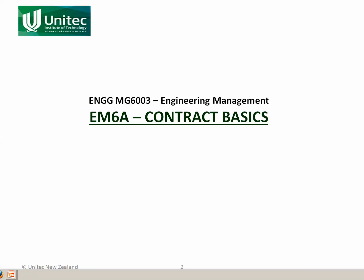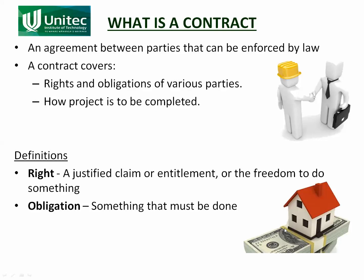In this video we're going to look at the basics of contract law. The first question is: what is a contract? A contract is an agreement between parties that can be enforced by law. There are two key elements: first, it's an agreement between parties, and second, it is enforced by law. For example, in a construction contract, the agreement is between the principal and the contractor — the principal wants something built, say a road, and the contractor wants to build it for him.